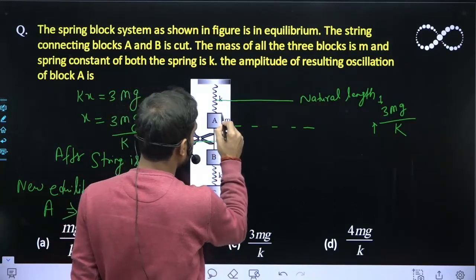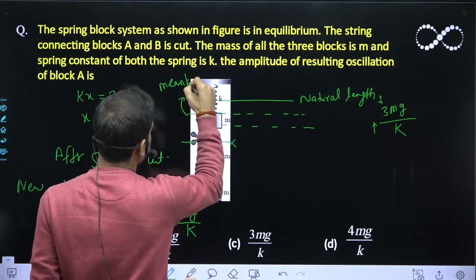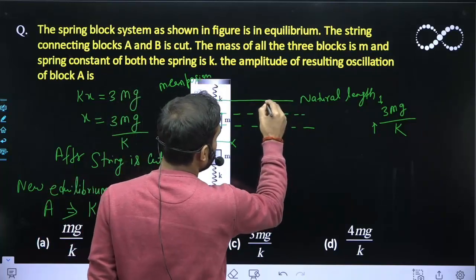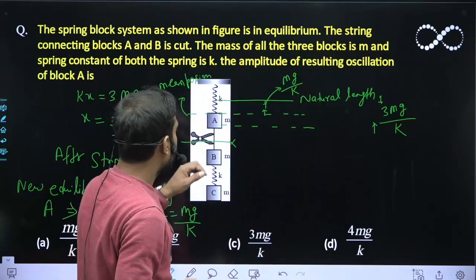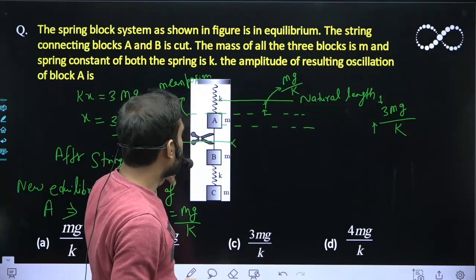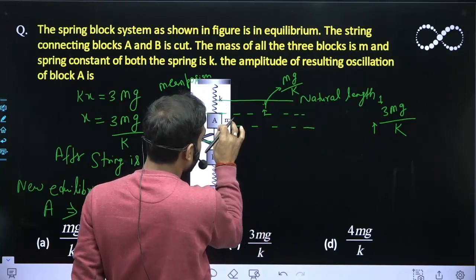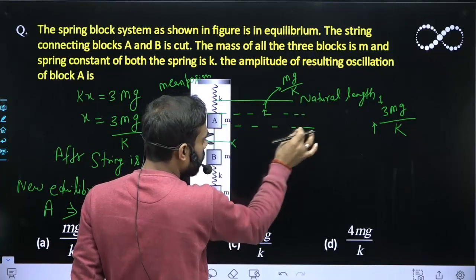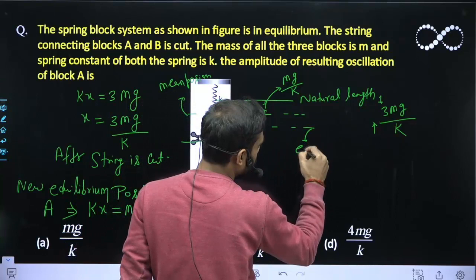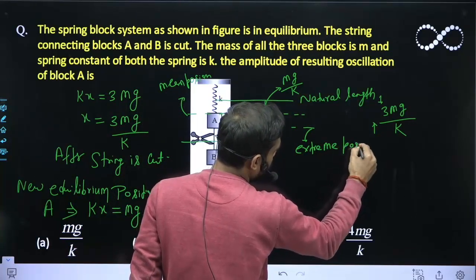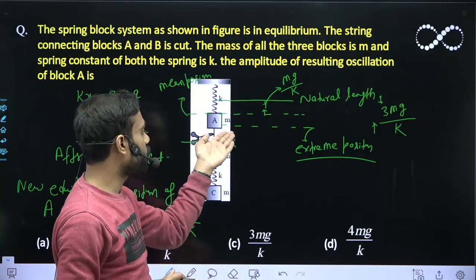Now the new equilibrium position is the mean position. At this position the block is at rest, and from here it will move towards the equilibrium position. Since at this position the block is at rest, this is the extreme position. The block comes to rest only at the extreme position, so this position must be acting like the extreme position.